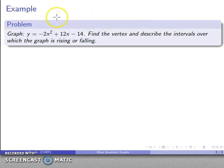So let's take a look at a quadratic graph. We know this is a quadratic because we have this x squared term. y equals minus 2x squared plus 12x minus 14.